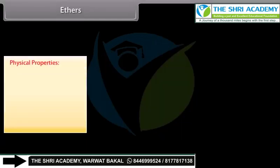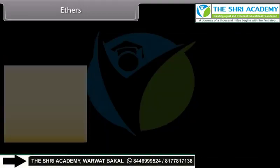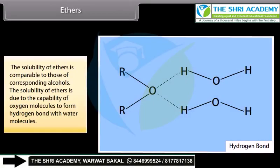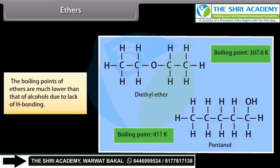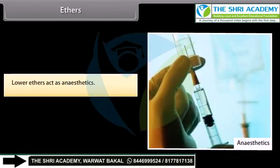Physical properties of ethers: Lower members such as dimethyl ether and diethyl ether are gases, while higher members are colorless, pleasant-smelling, low boiling volatile liquids. The solubility of ethers is comparable to those of corresponding alcohols. The solubility of ethers is due to the capability of oxygen molecules to form hydrogen bond with water molecules. The boiling points of ethers are much lower than that of alcohols due to lack of hydrogen bonding. Lower ethers act as anesthetics.